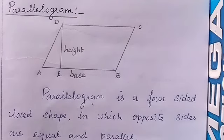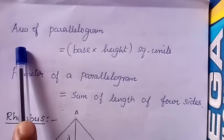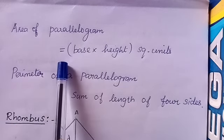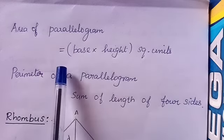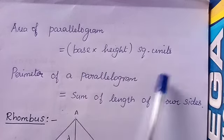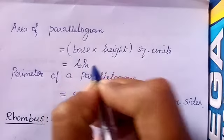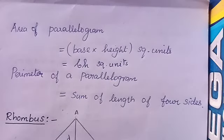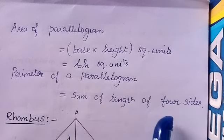The formula for the area of a parallelogram is base × height square units, written as b × h. To find the perimeter of a parallelogram, we add the sum of the lengths of all four sides.